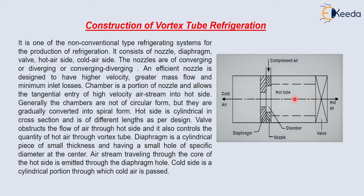The core air stream travels through and exits through the diaphragm hole. The cold side is a cylindrical portion through which cold air is passed. This one is the cold air side and this one is the hot air side. This is the construction of the vortex tube refrigeration system.